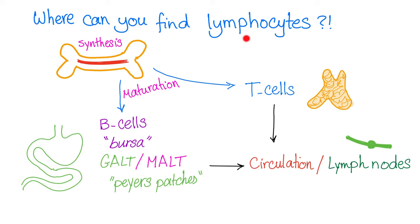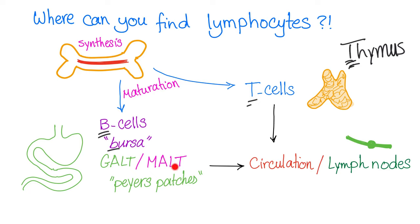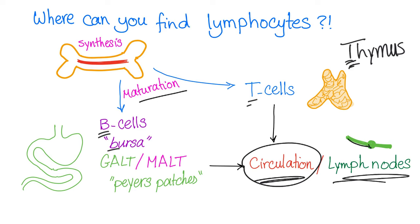Where can you find your lymphocytes? They start in the bone marrow — it's called hematopoiesis — then they mature in other tissues. The T-cells mature in the thymus; that's why we call them T-cells. The B-cells mature in the bursa. Humans do not have a bursa; we have a bursa equivalent called gut-associated lymphoid tissue, part of the mucosa-associated lymphoid tissue in Peyer's patches and other places. After maturation, they enter circulation and circulate in the bloodstream as well as the lymphatic system, passing through lymph nodes.